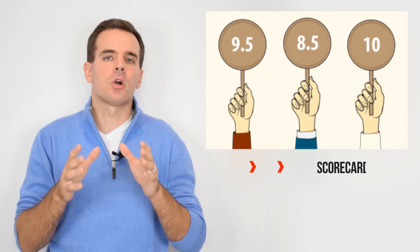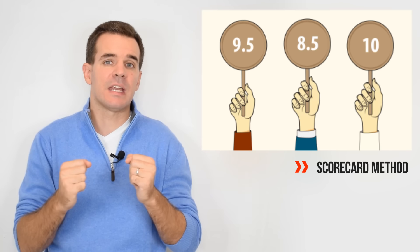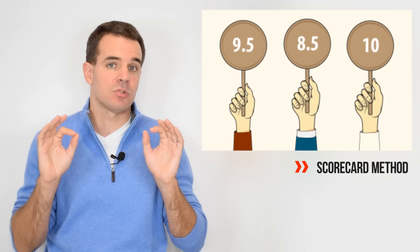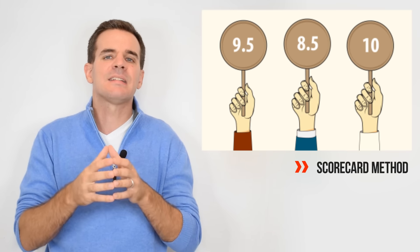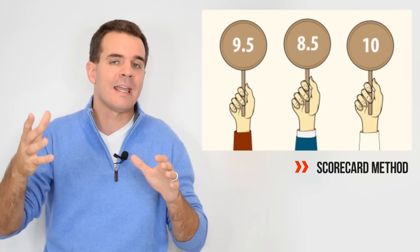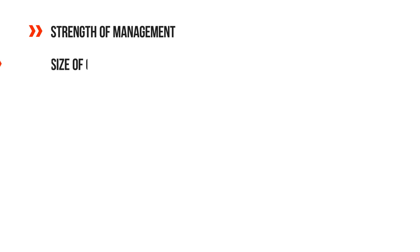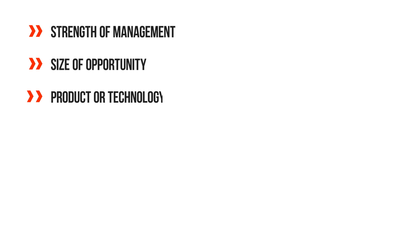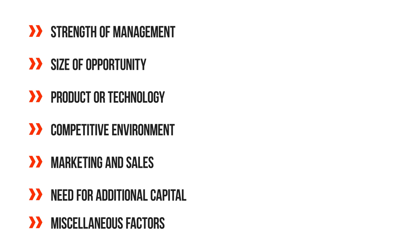The next is the scorecard method. What this method does is compare your startup against other companies that may be at your same stage, in your same location, or in your same segment. It relies on the following factors to put a value to the business: strength of management, size of the opportunity, the product or technology, the competitive environment, marketing and sales, need for additional capital, and miscellaneous factors.